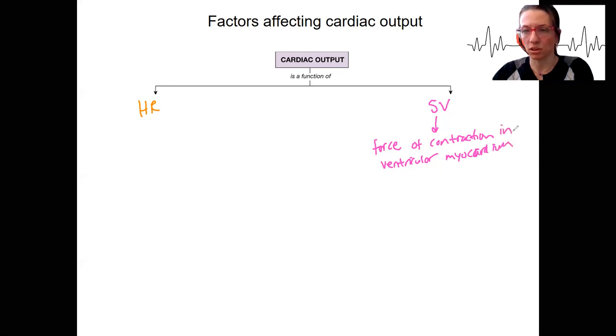What determines the force of contraction of the ventricular myocardium? Two things. One is contractility, so the contractility of the myocardium. This is going to be dependent on calcium levels. We've already reviewed this briefly. We'll look at it again. But you should know that the force of contraction can be regulated by calcium. This is called contractility.